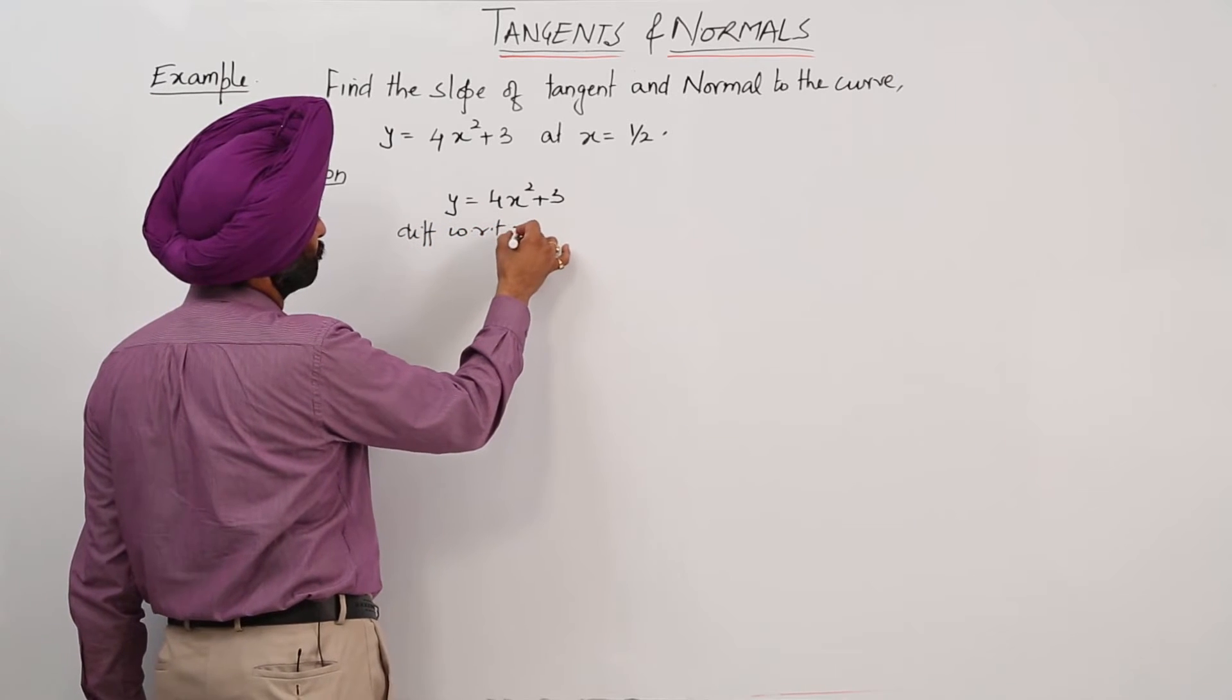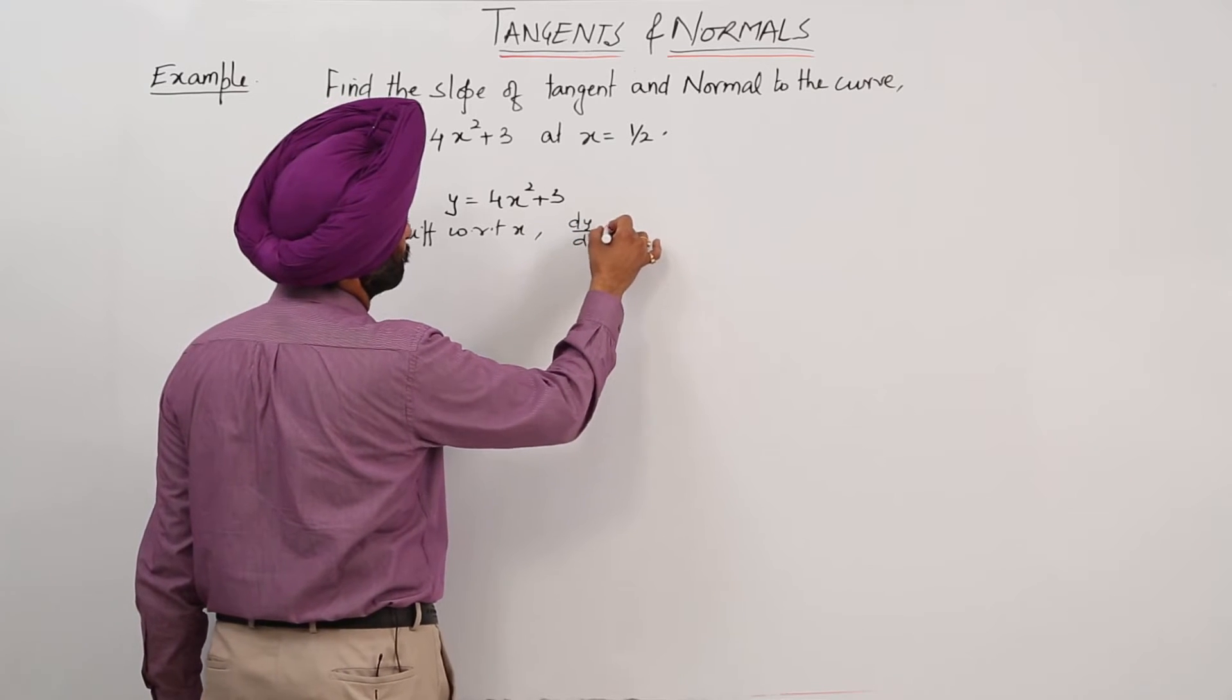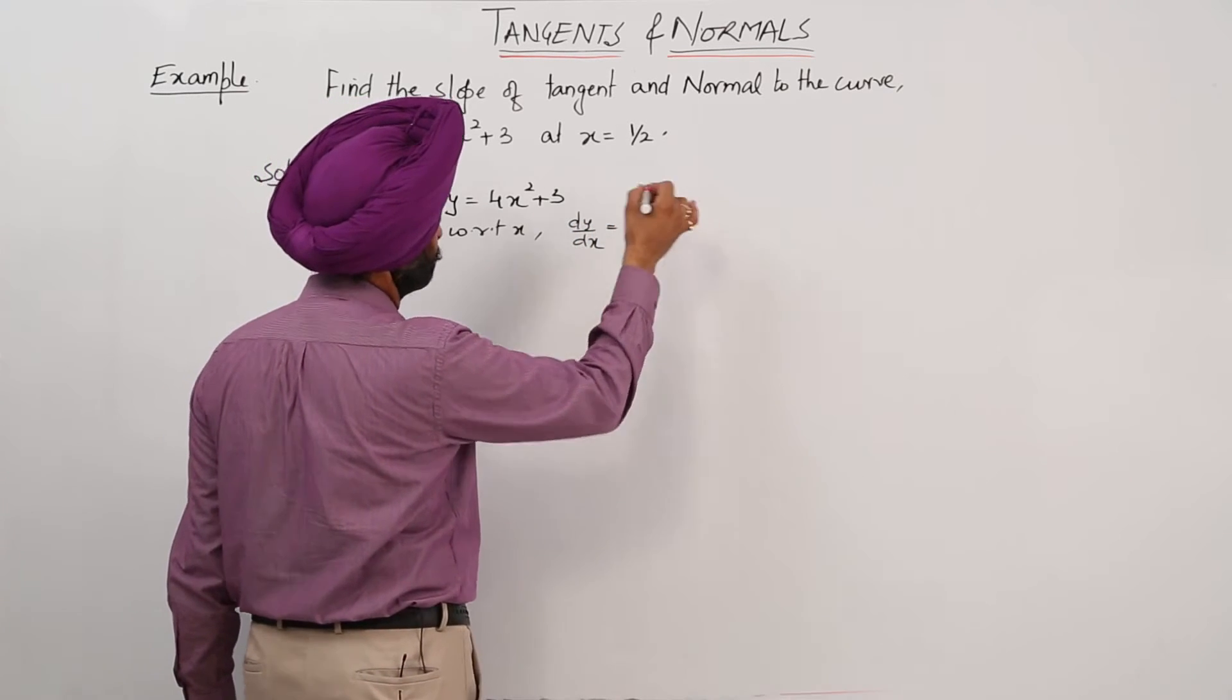Differentiating with respect to x, we get dy/dx equals 8x.